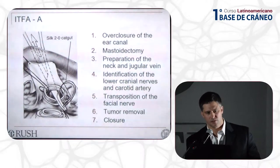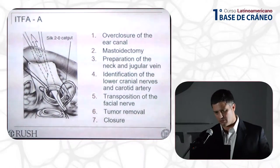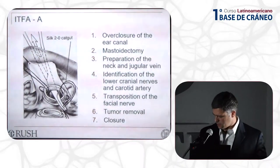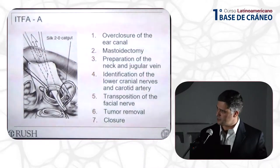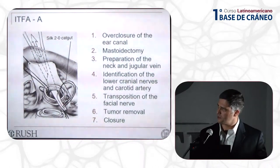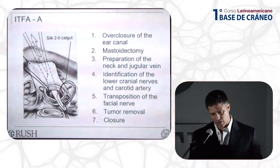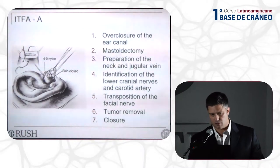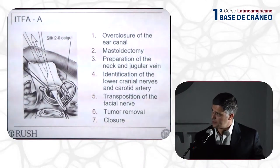One of the most technically demanding parts of the operation is closure of the external auditory canal — it's important to be meticulous because it can be a source of complications. We elevate the flap, turn the ear forward, carefully remove all the cartilage from the skin of the external auditory canal, place a vicryl suture and pull the external canal through like a sock, then over-sew it with nylon, and then put a second layer of closure with soft tissue from the posterior aspect of the wound with two-zero Vicryl.